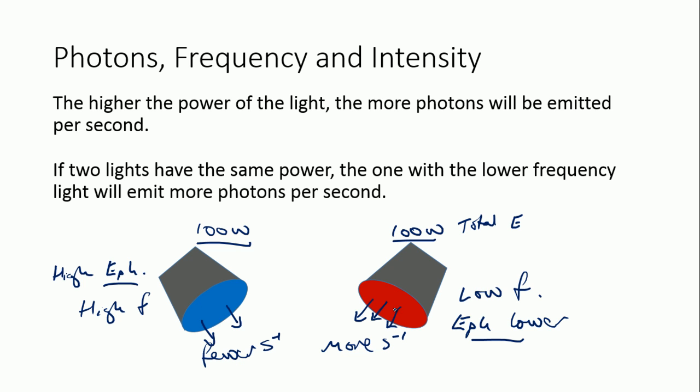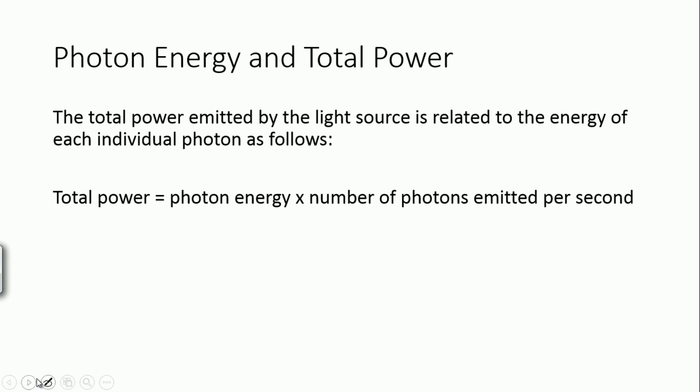All right, so that's that. And obviously if you double the frequency for the same total energy, you're going to have double the number of photons. Okay, putting that mathematically, we can see that the total power of the light is equal to the photon energy multiplied by the number of photons emitted per second. So if you have a lower photon energy, such as in the red light, keeping this one the same, you're going to have more photons emitted per second. All right, and that's it. Thanks for listening.